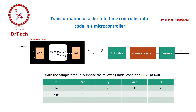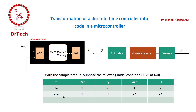At the next time t=2T: suppose the reference is 1 and the sensor gives Y=3, so the error is −2. Using our recurrence equation, with error=−2 and the previous control input U(T)=2, we get U(2T) = 2 + 2×(−2) = −2. We continue the same calculation for each subsequent time step.